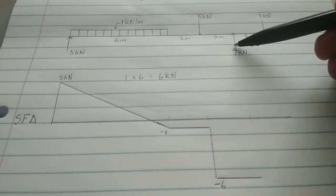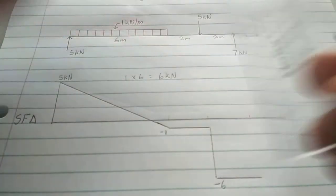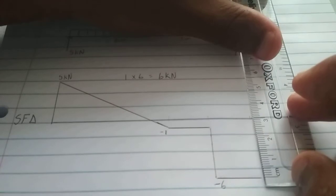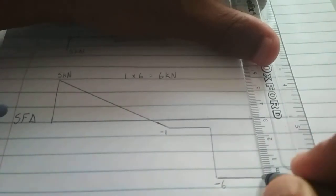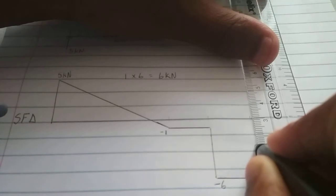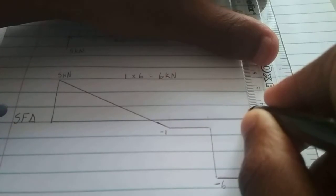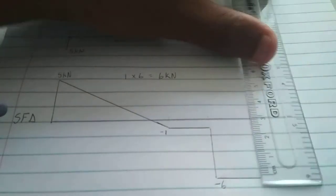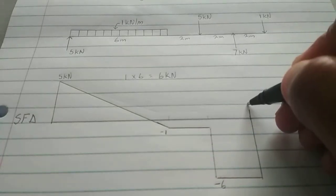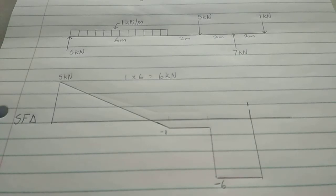Now, we have a force moving up 7 kN. Alright, so once again, put our ruler. We're going to count 7 from that 6. So we're going to go 1, 2, 3, 4, 5, 6, 7. Which brings us there. So minus 6 plus 7 gives us a 1. That's a positive 1. Okay?